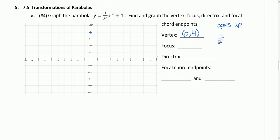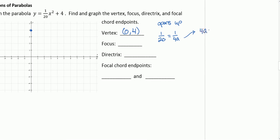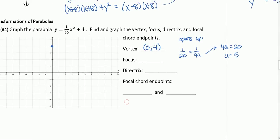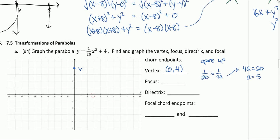We know that one over twenty is equal to one over four A, where A is the distance from the vertex to the focus. From that we can say four times A equals twenty, so A equals five — because you divide by four. That's our distance from the vertex to the focus, and our parabola opens up, so I'm going to move five above the vertex. That puts the focus at zero, nine on the Y axis.